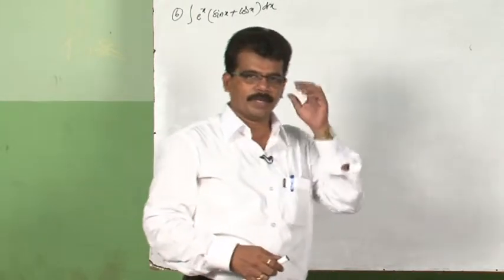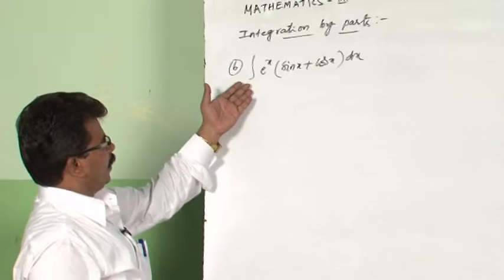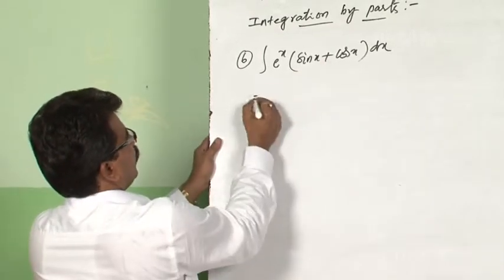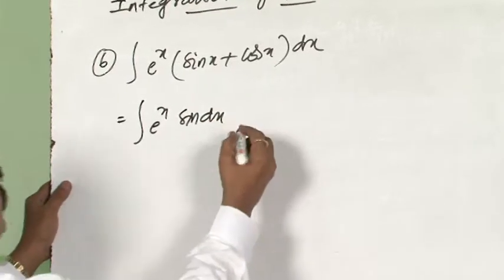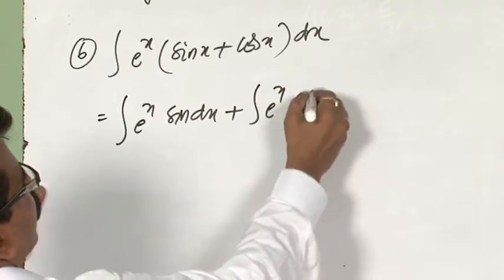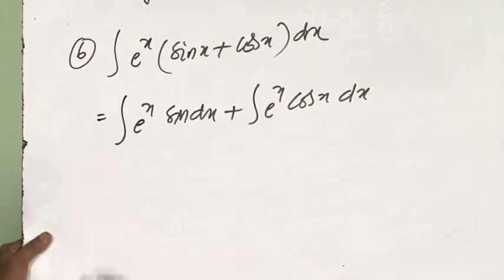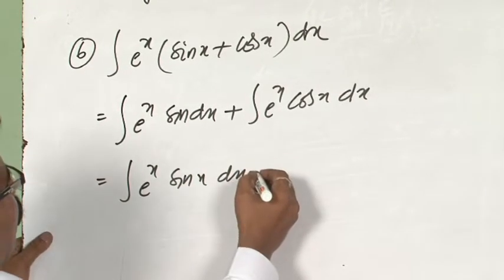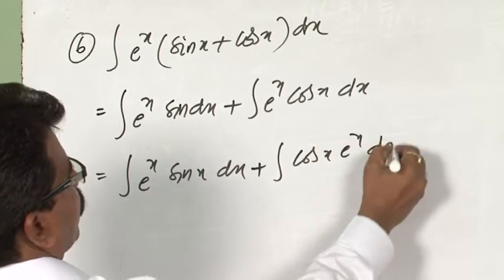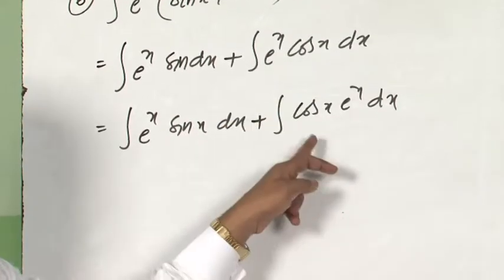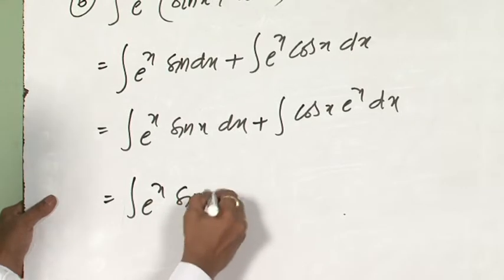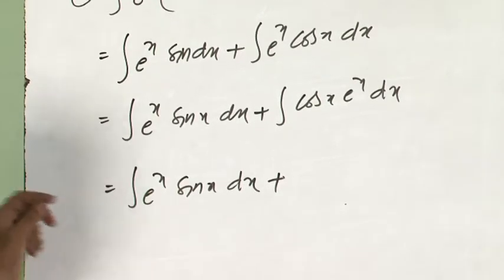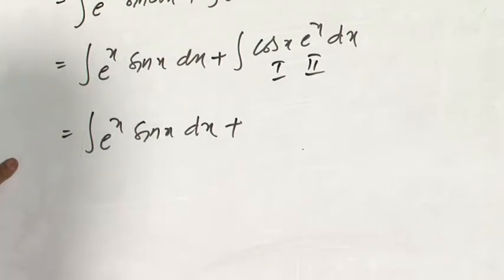Now let us solve one very important question: ∫eˣ(sin x + cos x)dx. This can be written as ∫eˣ sin x dx + ∫eˣ cos x dx. I am applying integration by parts to ∫eˣ sin x dx, keeping ∫eˣ cos x dx as it is for now. Here eˣ is the first function and sin x is the second function. We will apply the parts formula.